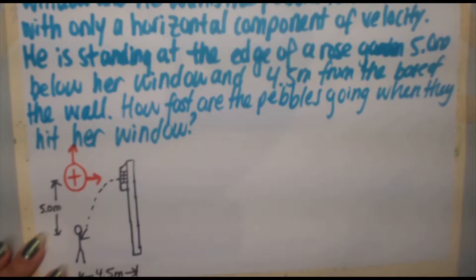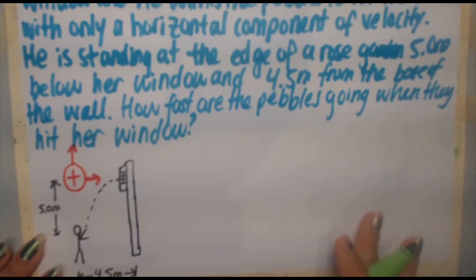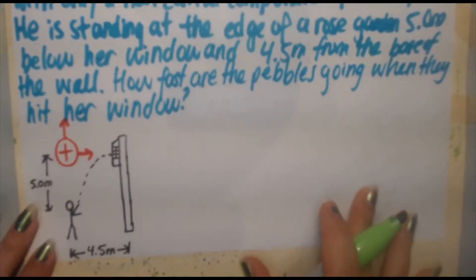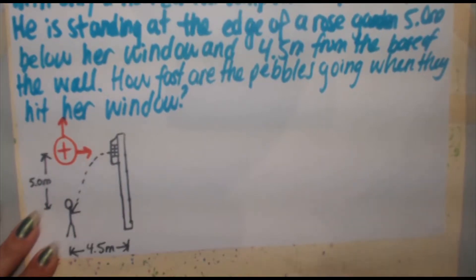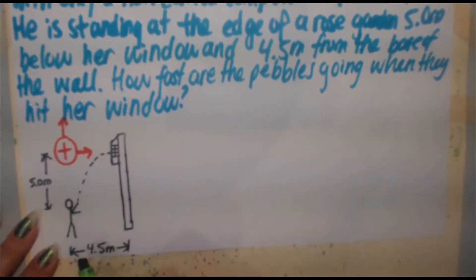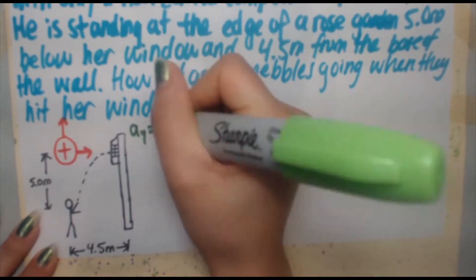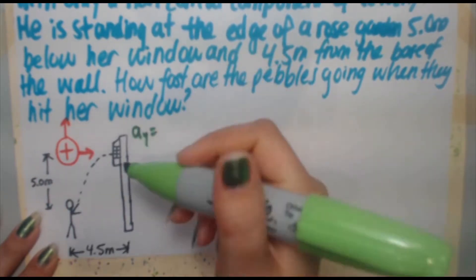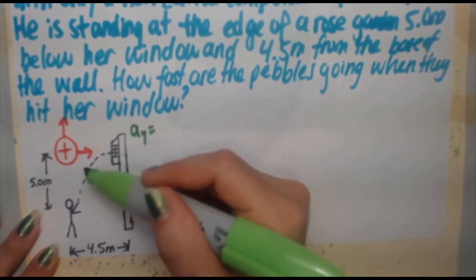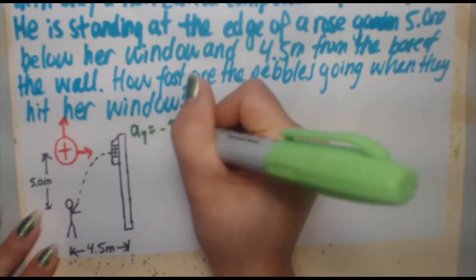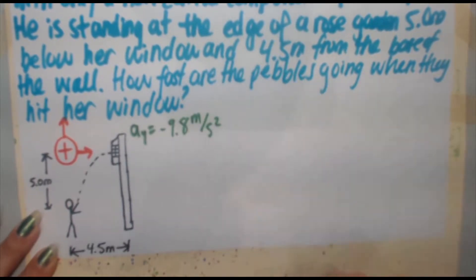Next I'm going to start adding some more information to this diagram based on what we know, our variables. They give us the vertical displacement and the horizontal displacement. I also know acceleration in the y direction is 9.8 meters per second squared. But because I defined up to be positive, it's minus 9.8 meters per second squared.